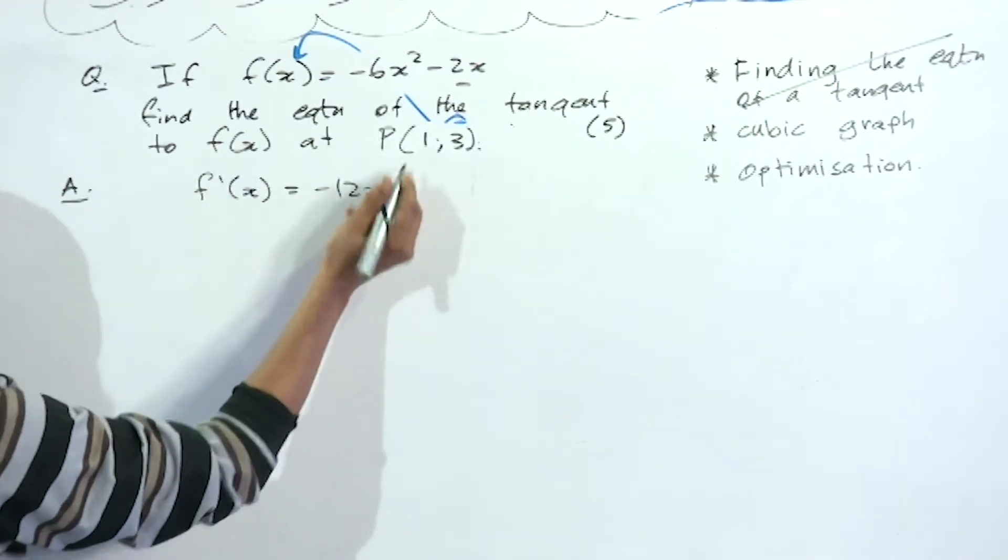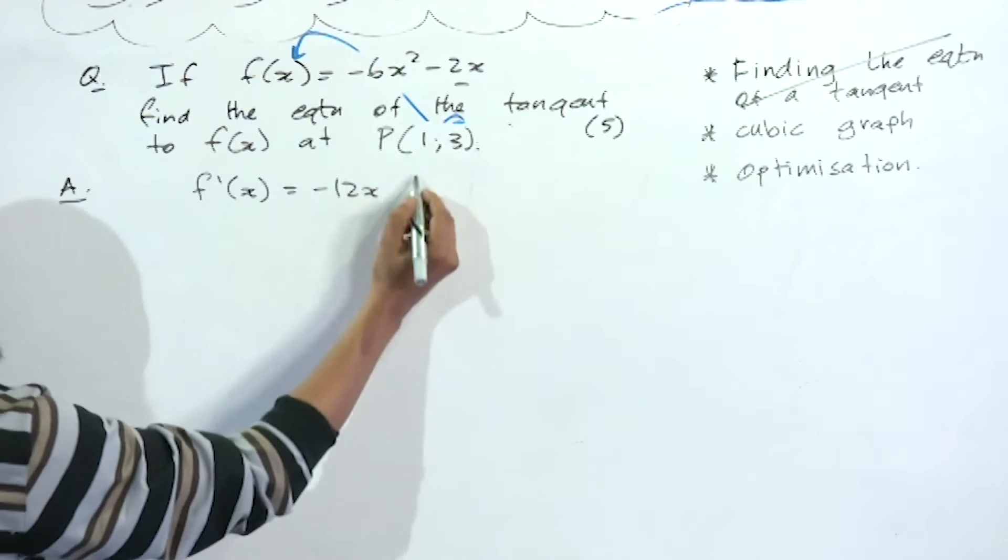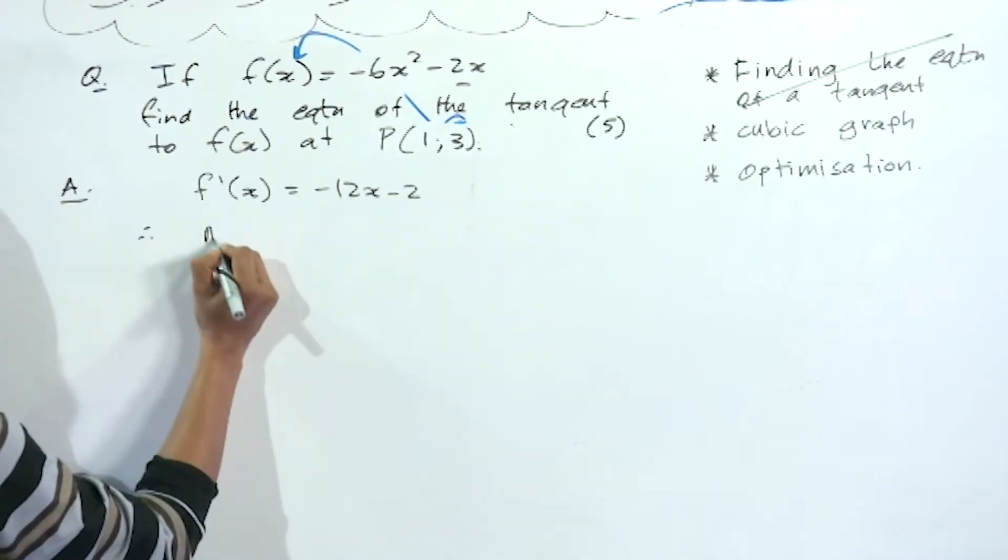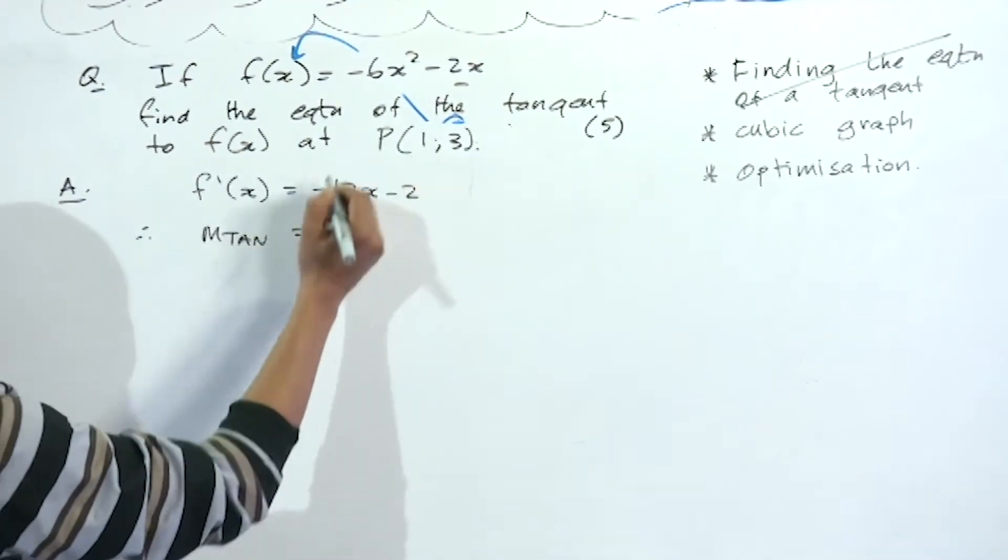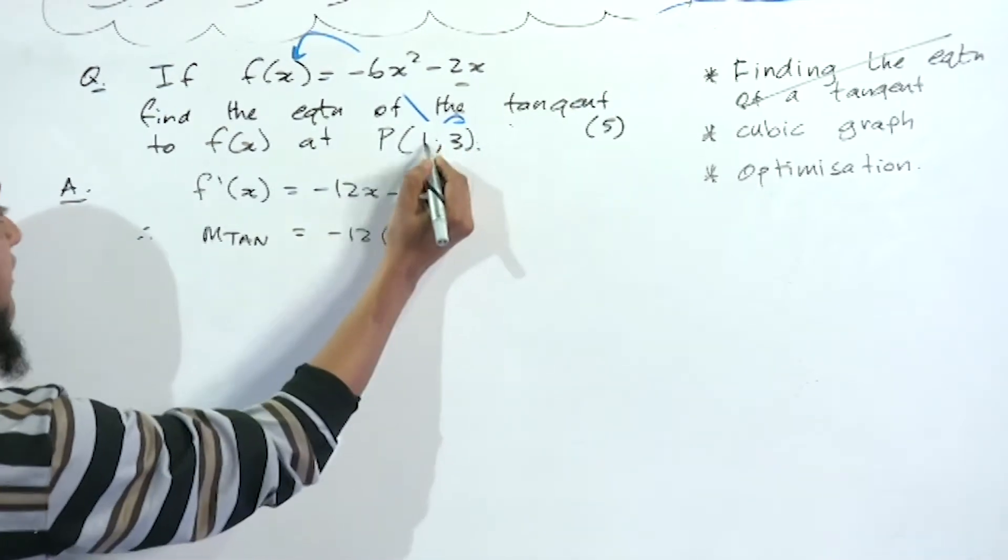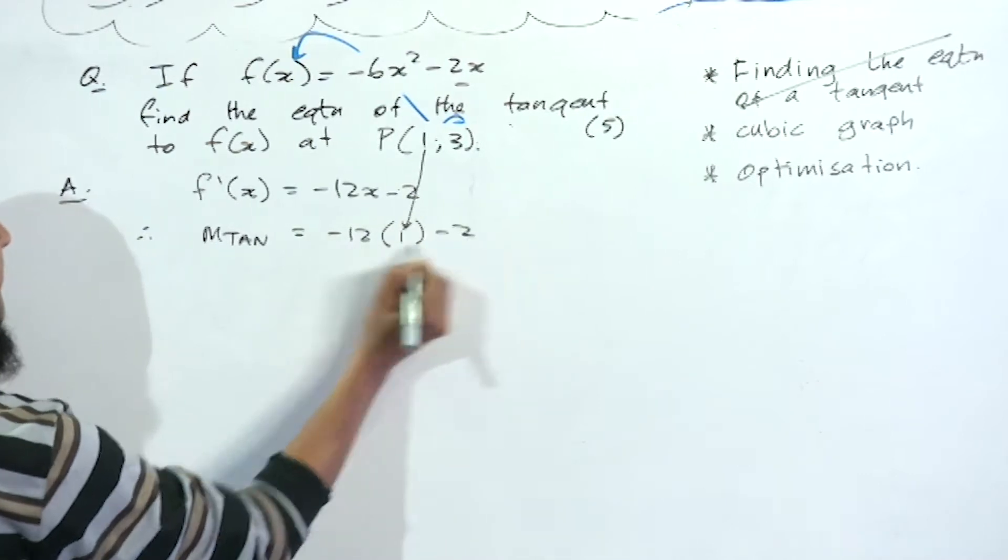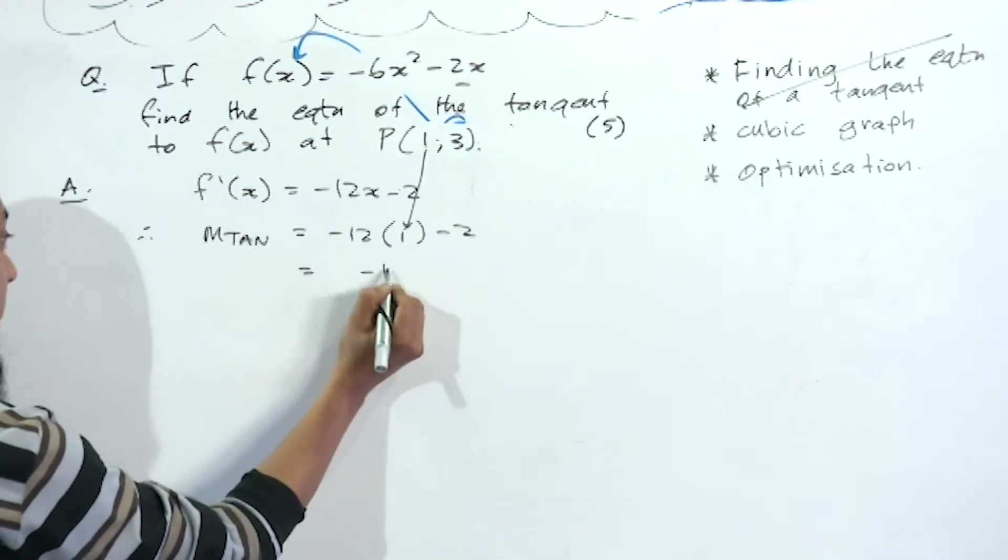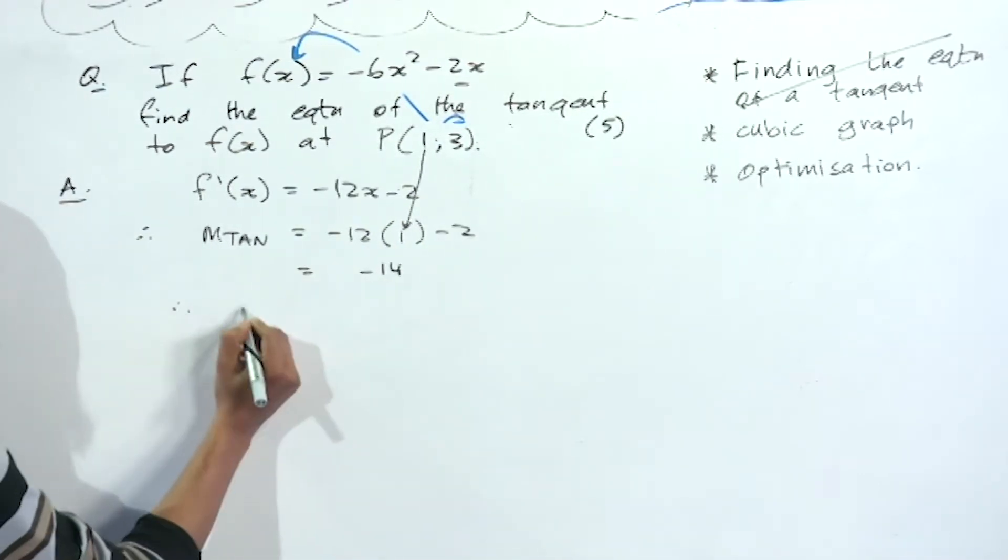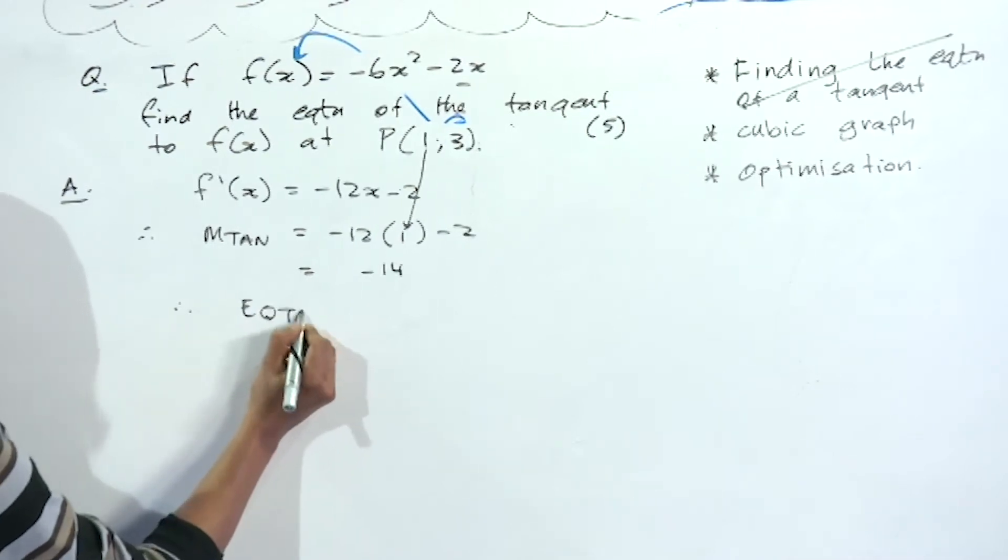Therefore, the m of my tangent, the gradient, is going to equal -12(1) - 2, which equals -12 - 2 = -14.